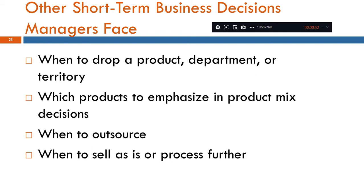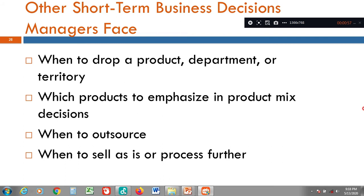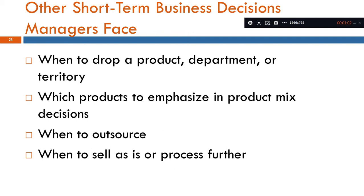First we will see the Product Drop or Department or Territory Drop or Keep Decision — whether to keep in progress or operation of a product, department, or territory. First we have to use the Manager Decision Technique. In order to make a decision, we need to make an analysis, known as Incremental Analysis. So let us see the dropping of a product, department, or territories.